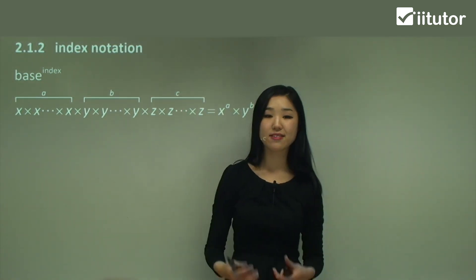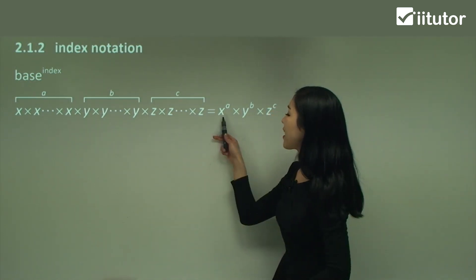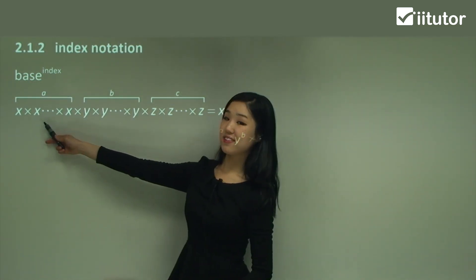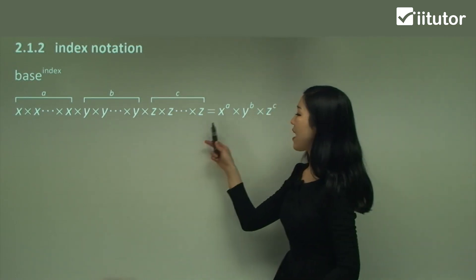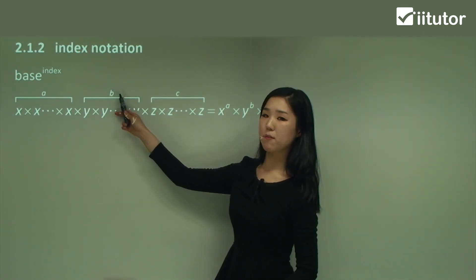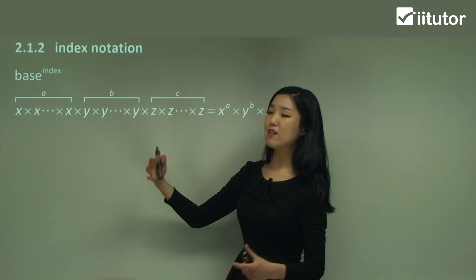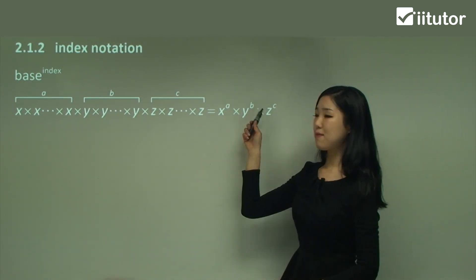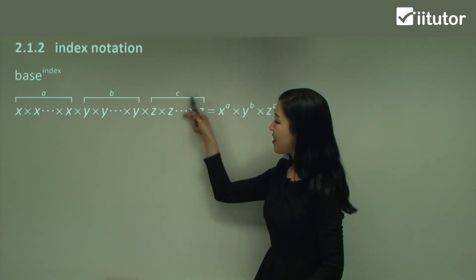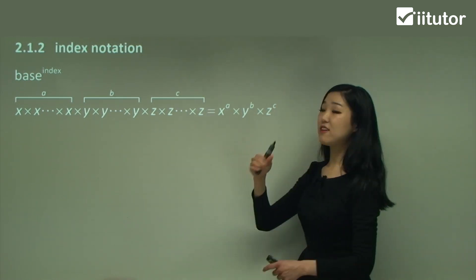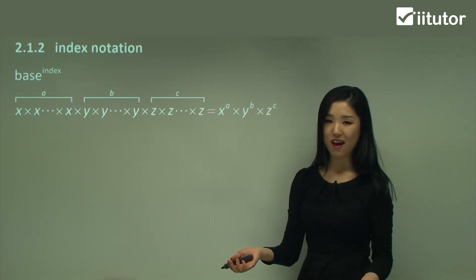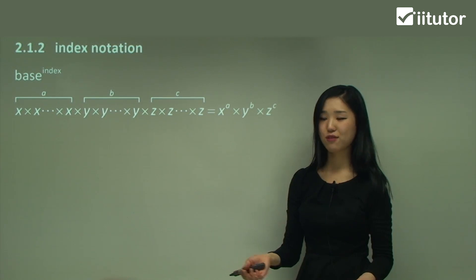So if I write them in index form, I'll get x to the power of a, because there's 'a' lots of x's. Then times y to the power of b, because there's 'b' lots of y's. And z to the power of c, because there's 'c' lots of z's. This is something you already know — nothing too different.